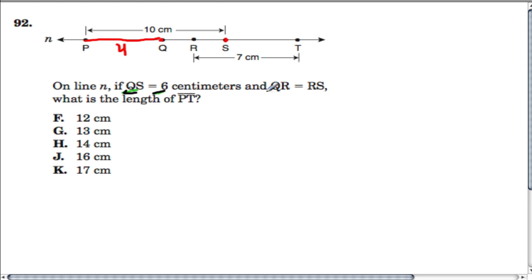Now that we know that, we also know QR equals RS. So here's QR, this little section, and it's equal to RS right here. So QR and RS are equal, and altogether they're 6, that means they're each 3.